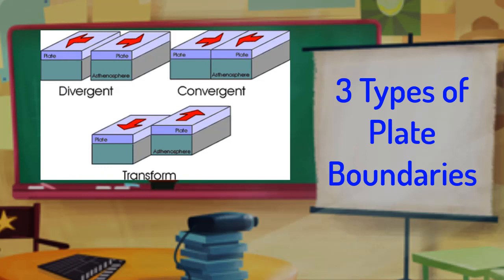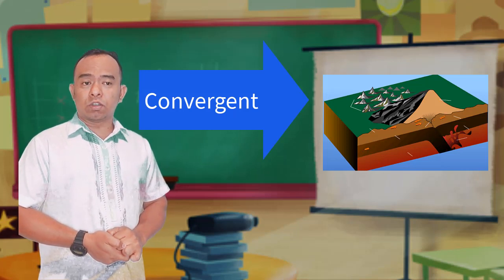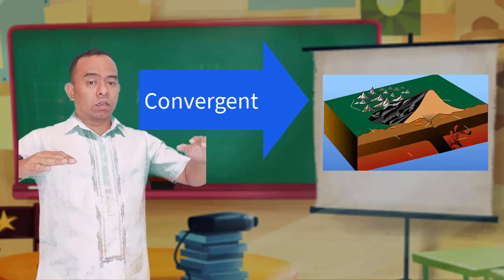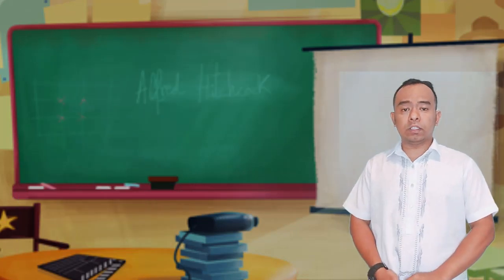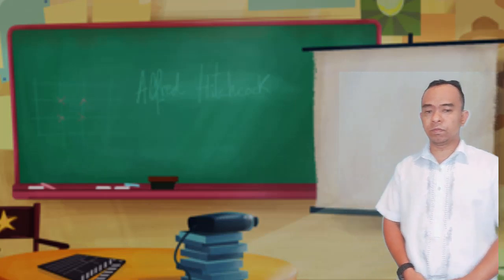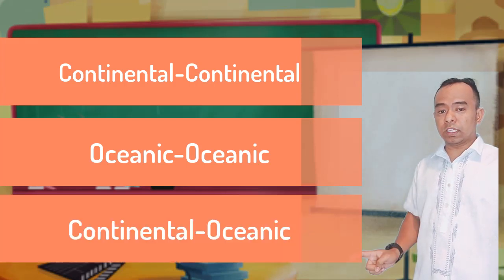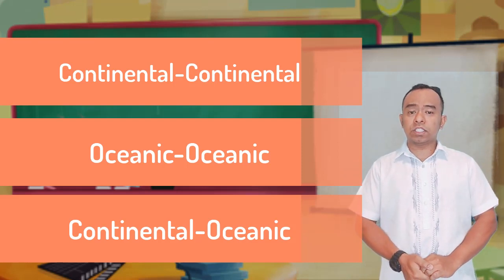Let's look at each type of plate boundary and their examples. Convergent boundaries are boundaries that crash or crunch together, meaning the two plates are colliding with one another. There are three types of convergent boundaries: continental-continental, oceanic-oceanic, and continental-oceanic convergent boundaries.